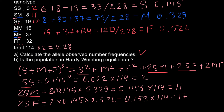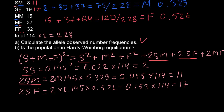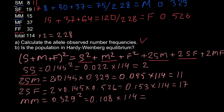Next is the MM genotype. According to our formula, MM corresponds to M squared. We multiply the frequency of M (0.329) by itself and square it, giving 0.108. Multiplying by 114 individuals gives 12.33, which we round to 12. The observed number is 15 and the predicted number is 12.